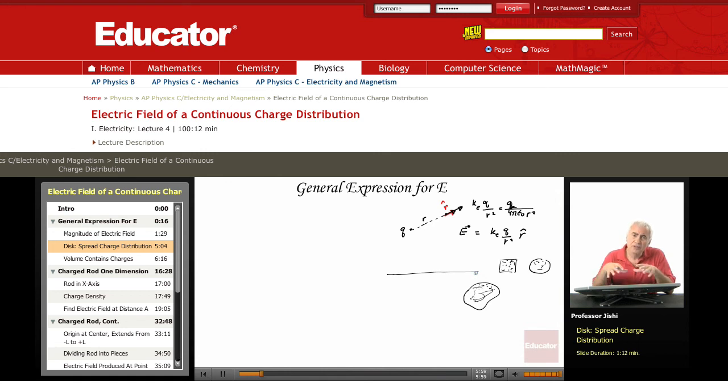So, if we have a continuous charge distribution, how do we get the electric field for that?